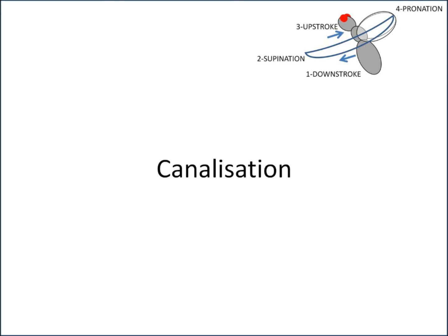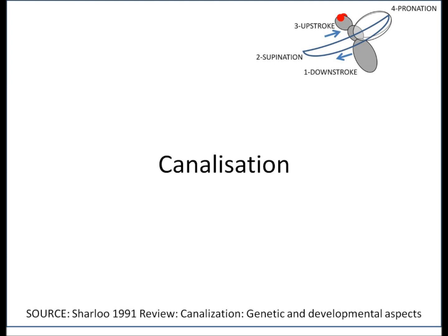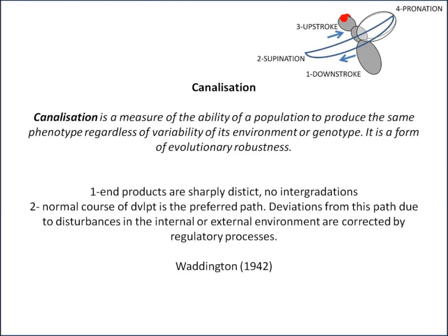Today on Viverbytes we are talking about canalisation. The source I'm using is Charlu 1991, 'Canalisation: Genetic and Developmental Aspects', which is quite a good review. The term was first coined in 1942 by Waddington in the context of developmental biology. Canalisation is defined as a measure of the ability of a population to produce the same phenotype regardless of the variability of its environment or genotype. It is a form of evolutionary robustness.